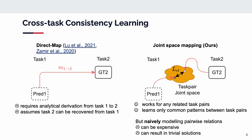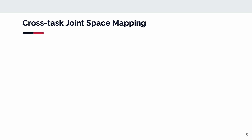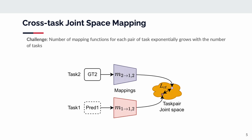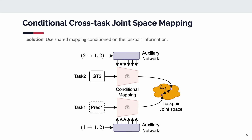However, naively modeling pair-wise relations can be expensive and can result in trivial solutions. To learn the joint space mapping, one can use separate mapping functions for mapping predictions and labels into the joint space. However, the number of task-agnostic mapping functions grows exponentially with the number of tasks. To address this problem, we propose to use a shared mapping conditioned on the task-agnostic information. As shown in the figure, the task-agnostic information is from task 1 to the task pair of 1 and 2.